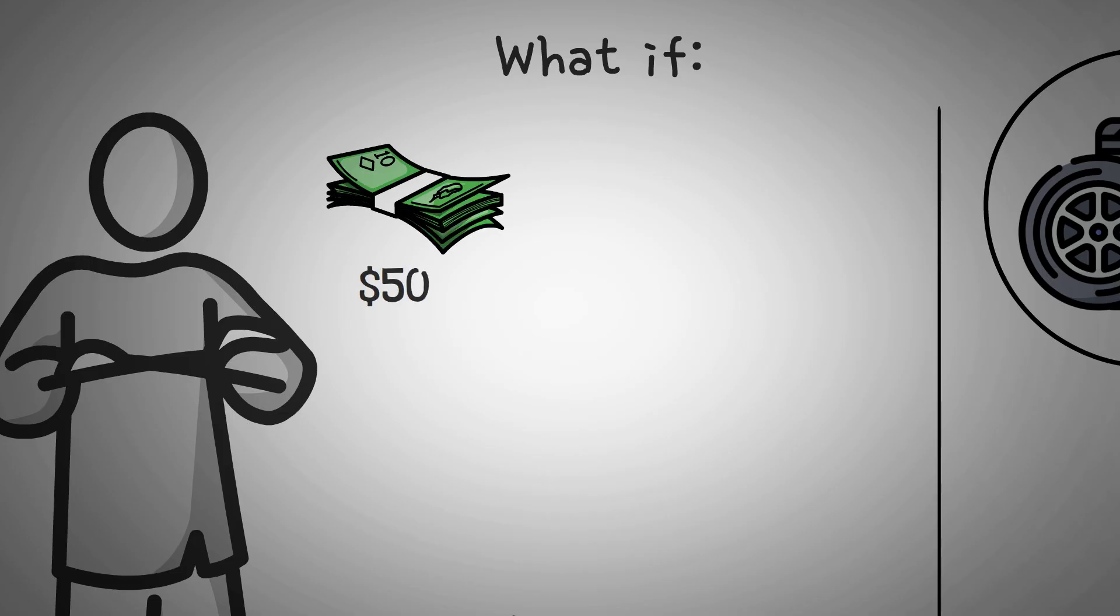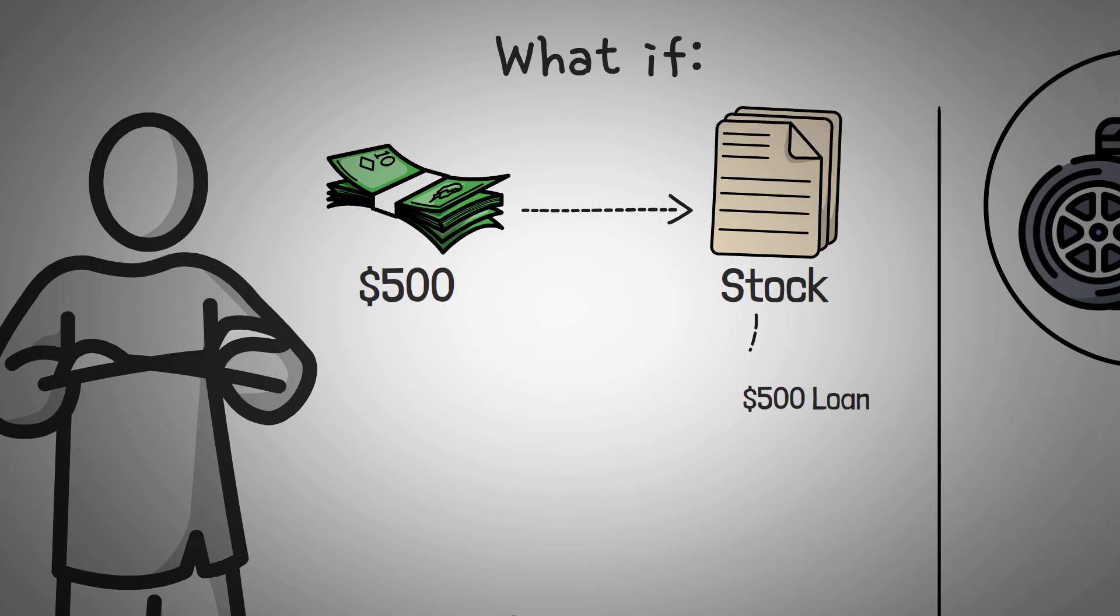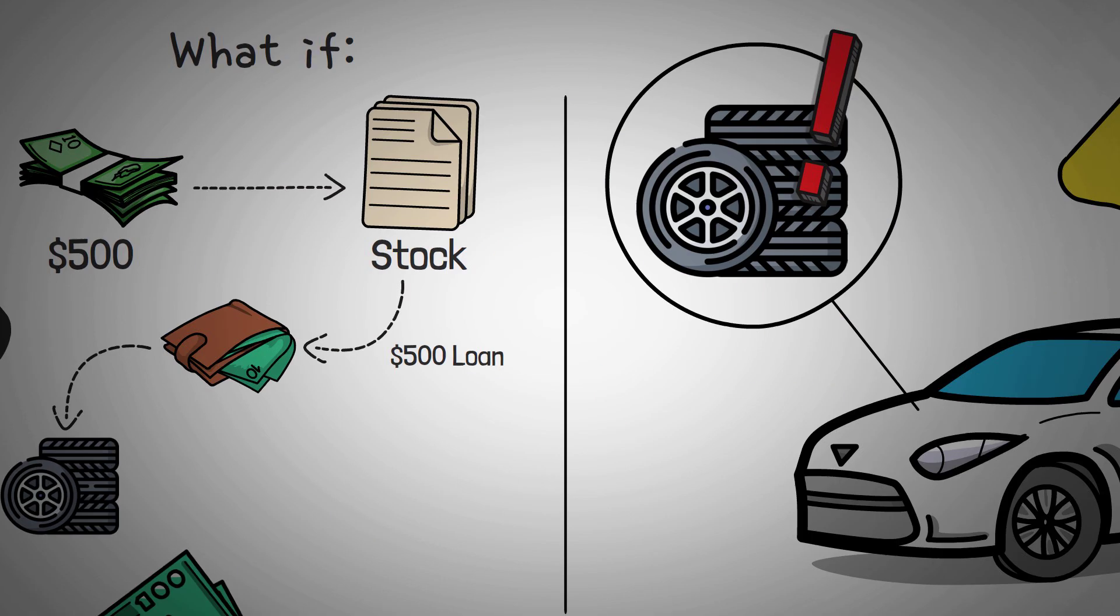What if you found out that you could invest in the stock, and in return, they would give you the same amount of money that you invested, but with a built-in promise that you'll return it? You could then buy the stock and take out a loan for the money you need for the tires.